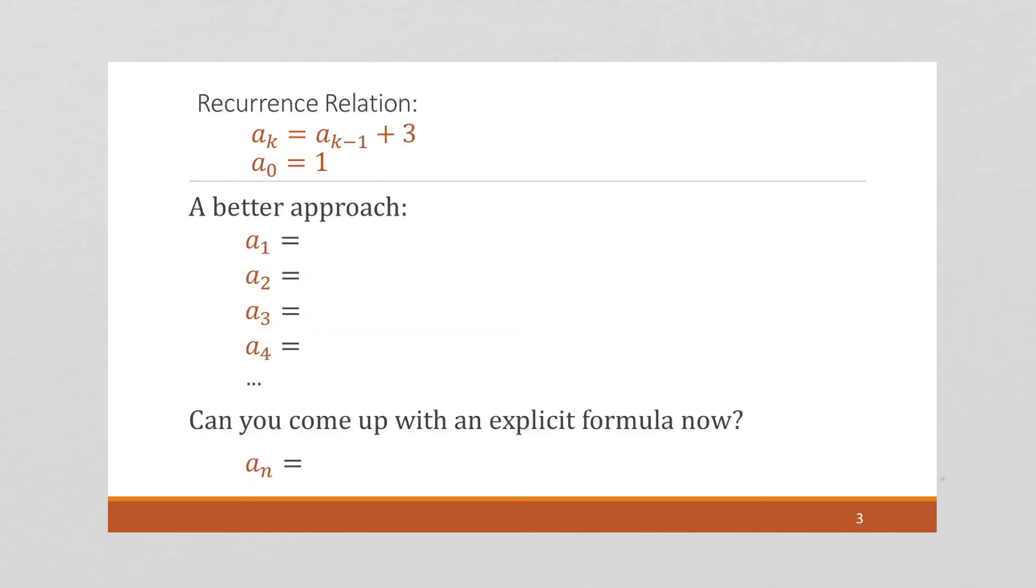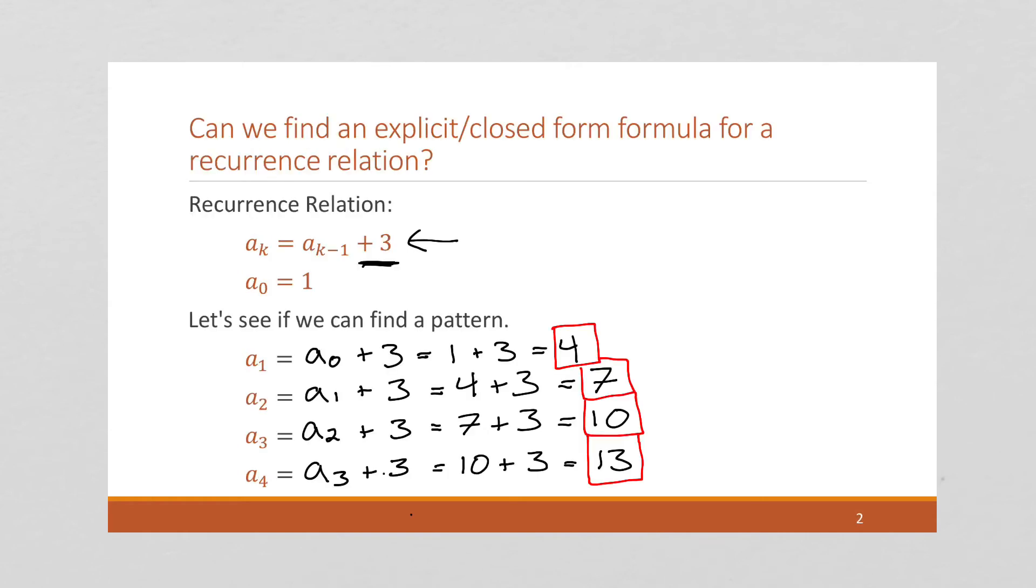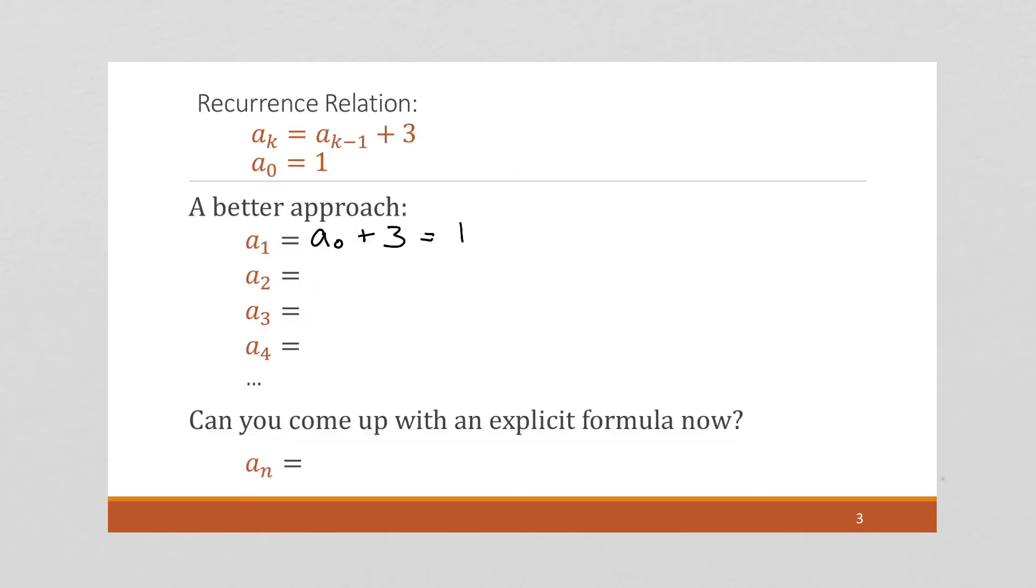So here I'm going to come up with a sub 1, we already did this, this is a 0 plus 3. But I'm going to rewrite it without concluding this 4. So I'm going to stop by saying this is 1 plus 3. And I'm going to use that as the value for a sub 1, not 4, just 1 plus 3. So a sub 2 becomes a sub 1 plus 3. So I'm going to substitute 1 plus 3 for a sub 1 plus 3.